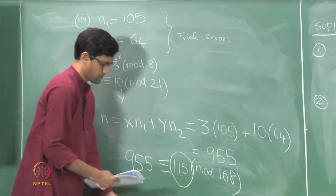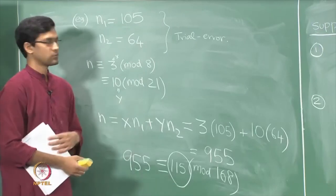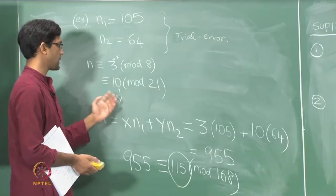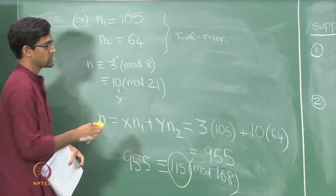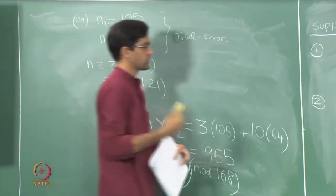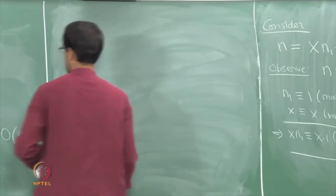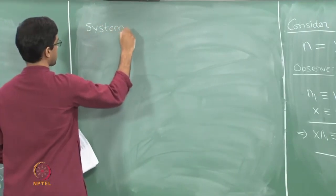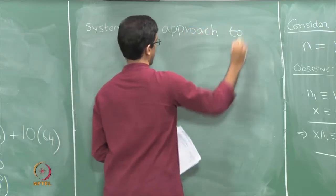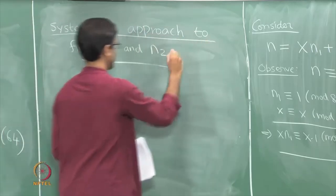This second approach solves the same problem, but still requires one brute-force step — how do you find n1 and n2? If you end up solving both by trial and error, that seems like more work than doing brute force directly on the original congruences. This approach is useful only if you have a more systematic way of solving for n1 and n2 without trial and error. That is the approach I will describe next — a systematic or algorithmic approach to find n1 and n2.